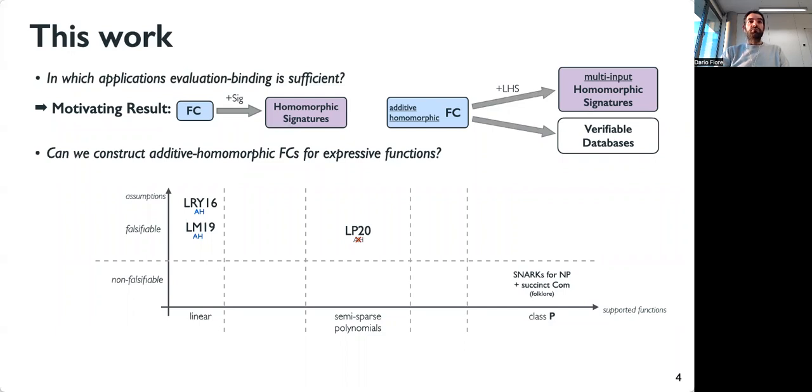The next question is whether we can construct additive homomorphic functional commitments. Unfortunately, if we look at the state of the art, only schemes for linear functions are additive homomorphic. Our main results are the first additive homomorphic functional commitments for functions beyond linear. We have one scheme for constant degree polynomials and another for circuits in the class NC1.